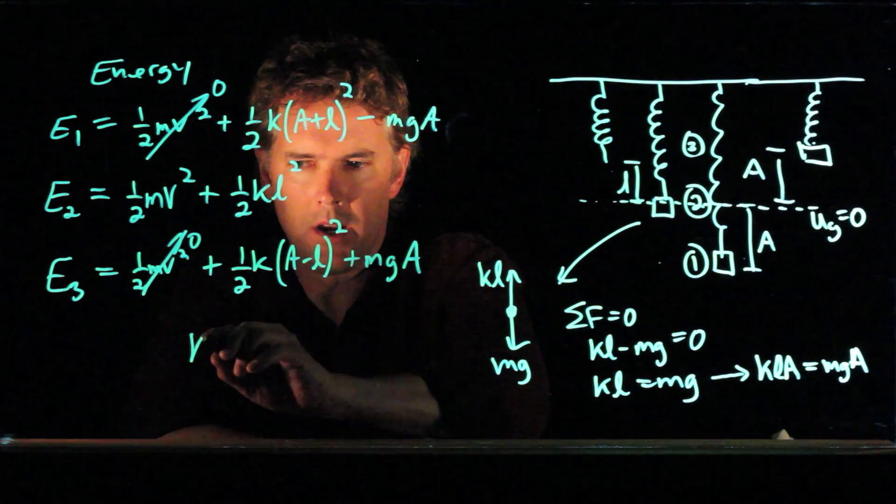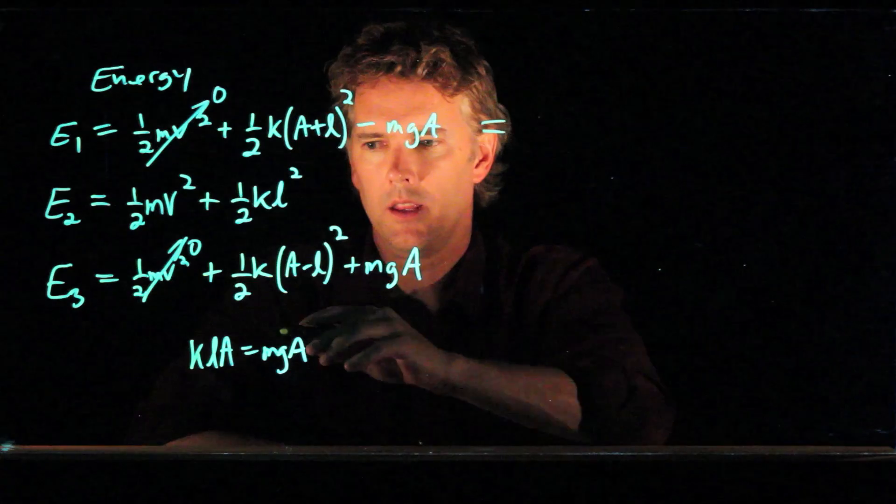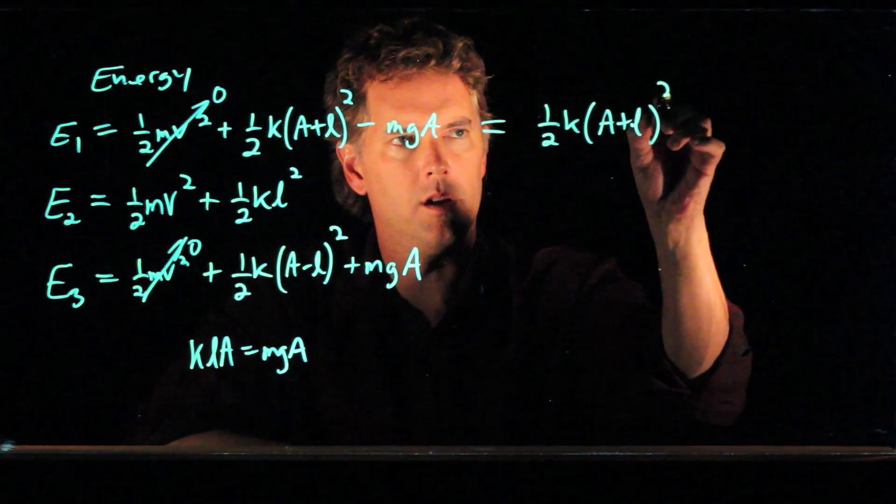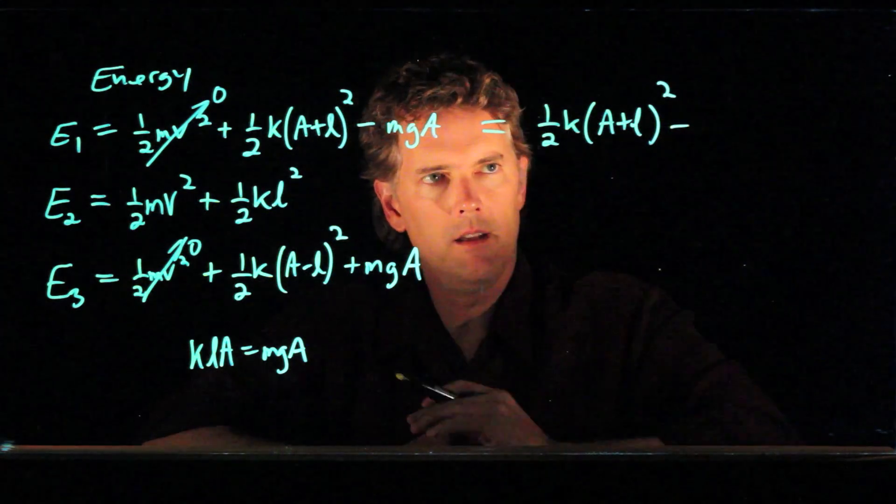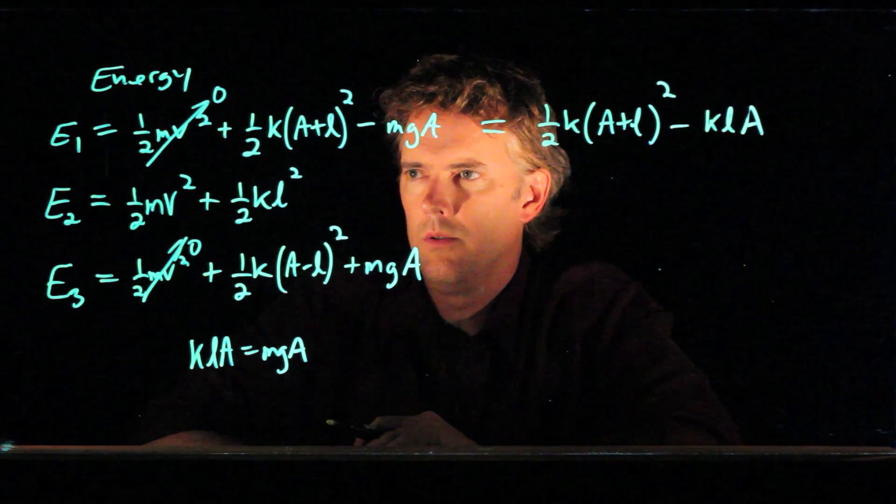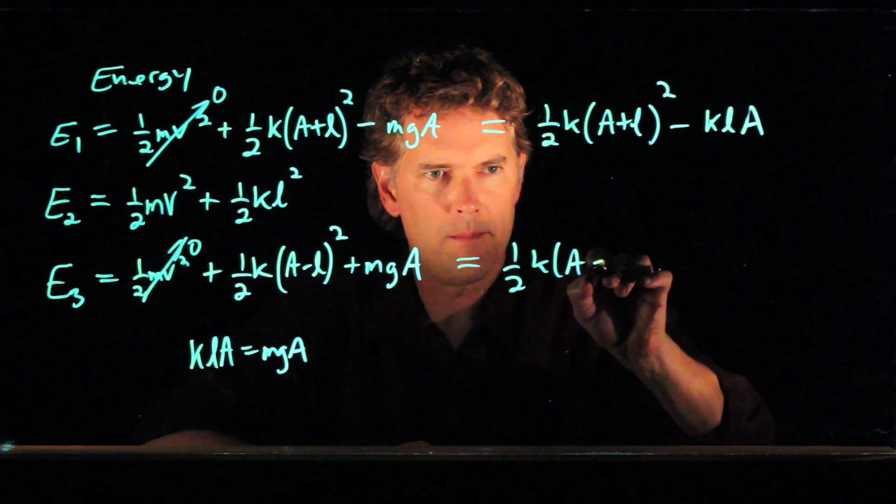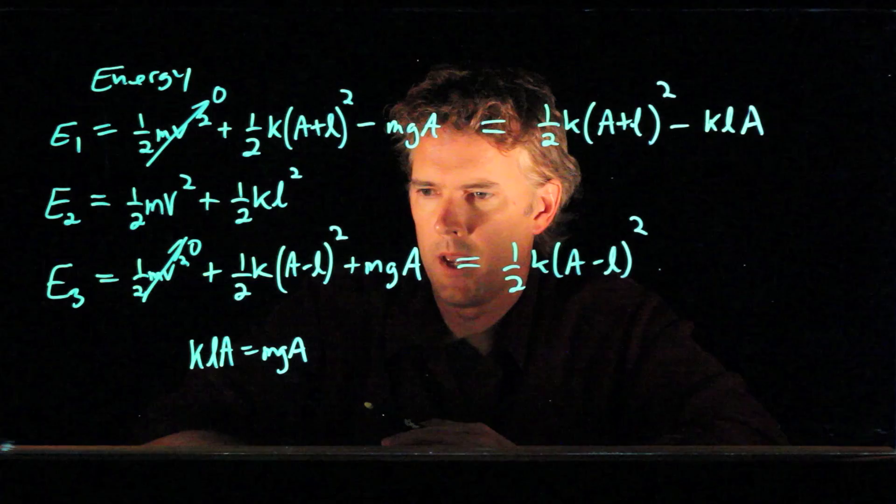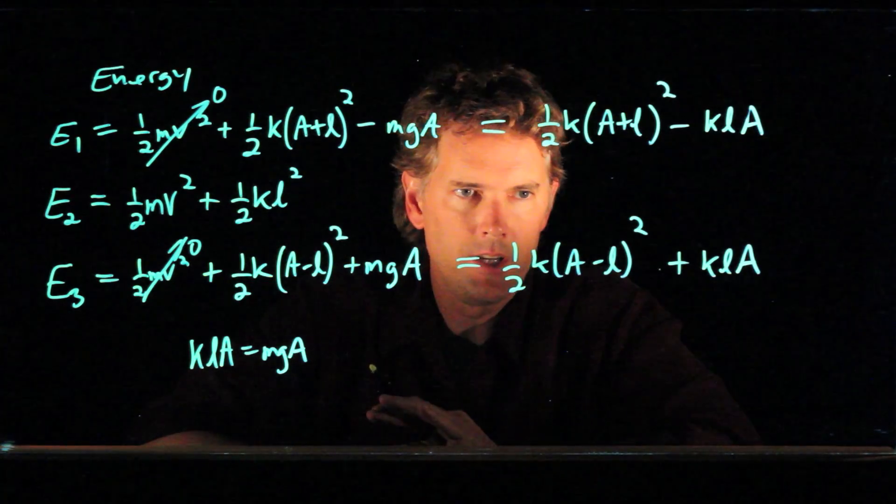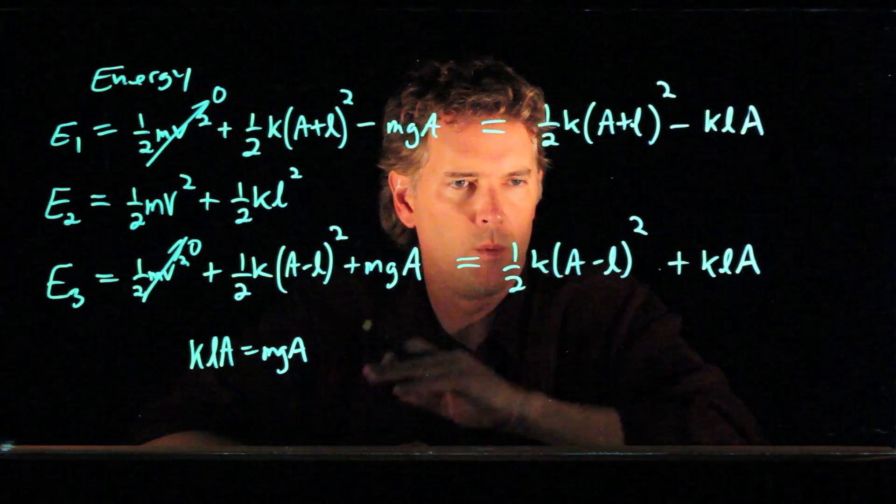OK, and now we're going to take advantage of this little last statement here, K L A equals M G A. OK, so let's put in these terms here. So we have one half K A plus L quantity squared minus M G A. But M G A we could write as this, K L A. E2, we'll leave that alone for a second. E3 becomes what? One half K A minus L quantity squared. And then we have plus M G A, which is plus K L A. So now we have all those energies in terms of the spring constant K, the rest length L, and how far we stretched it, A.